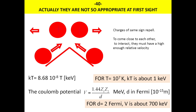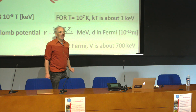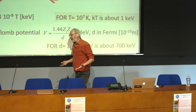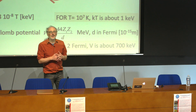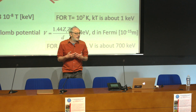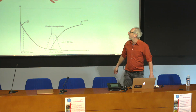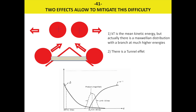There are two points. First, there is a Maxwell-Boltzmann distribution of energies, so there is a high-energy tail extending beyond the mean. But this alone is not sufficient. The second key is the quantum tunnel effect, discovered first in Bern and then highlighted by George Gamow - the same Gamow of Big Bang nucleosynthesis. Instead of climbing over the Coulomb barrier, particles can tunnel through it, so they do not need so much energy to reach each other.